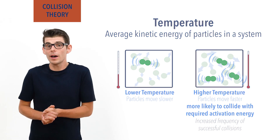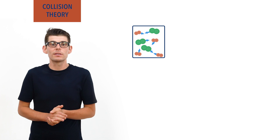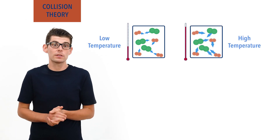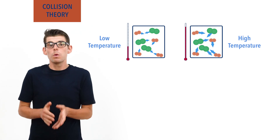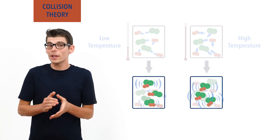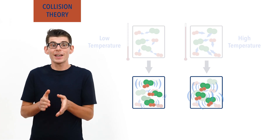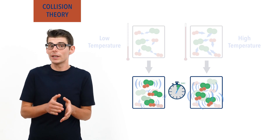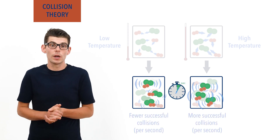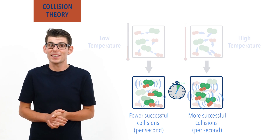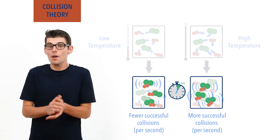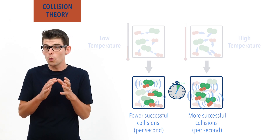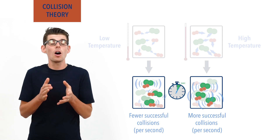For example, with our hydrogen and chlorine reaction, if we increase the temperature, the hydrogen and chlorine molecules end up moving much faster and, on average, will collide with more energy, meaning more collisions are now going to reach that activation energy barrier. Every second there are more successful collisions than at a lower temperature, meaning an increase in the frequency of successful collisions. There are still plenty of collisions that aren't successful, however. It's just that a greater proportion of all the collisions each second are now successful.